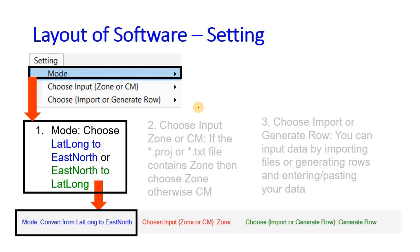Now let's see the settings menu. In the settings menu you will see three modes, choose zone or CM, and import or generate rows. In the mode you can choose lat/long to UTM (easting/northing) or easting/northing to latitude/longitude. Whatever you choose will appear in the status bar.